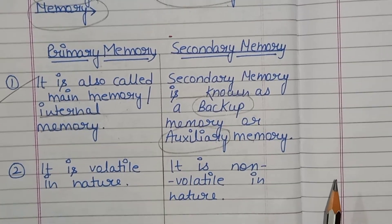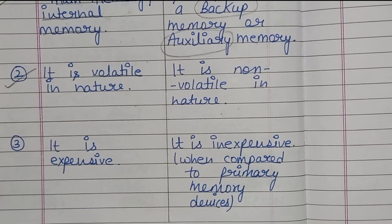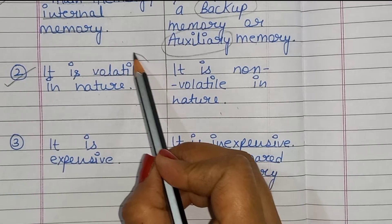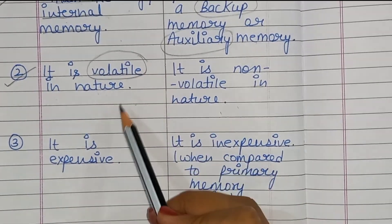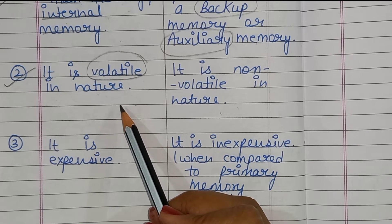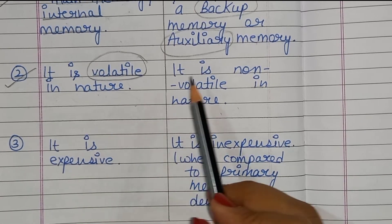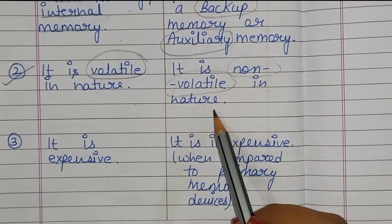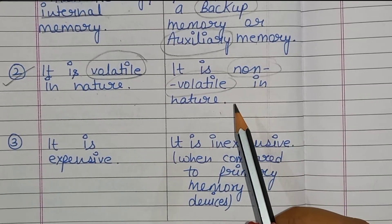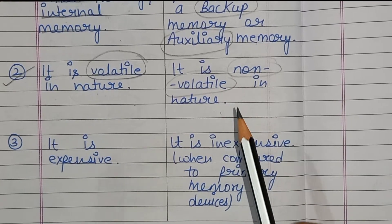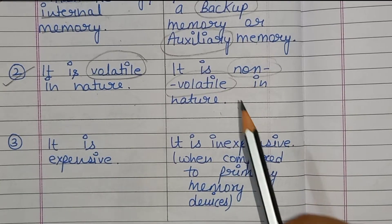The next difference is primary memory is volatile in nature. Volatile in nature means that the contents are lost when the device is powered off. Secondary memory is non-volatile in nature, which means that the contents are retained even if the device is powered off.